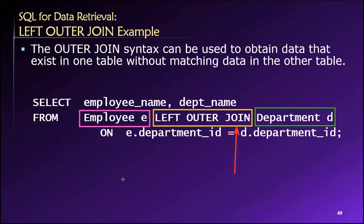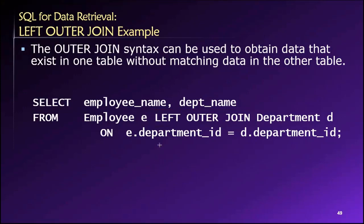It's simply about where the table name is relative to where the join keyword appears. If the table appears on the left side, it's the left table. If the table appears on the right side, it's the right table. With that concept in mind, when you do a left outer join, you're telling the database: I want all of the rows out of the left table, and I want rows out of the right table where a match exists.